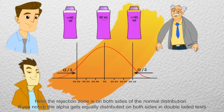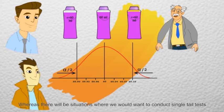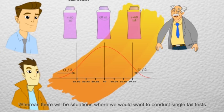If you notice, the alpha gets equally distributed on both sides in double tailed tests. Whereas there will be situations where we would want to conduct single tailed tests.